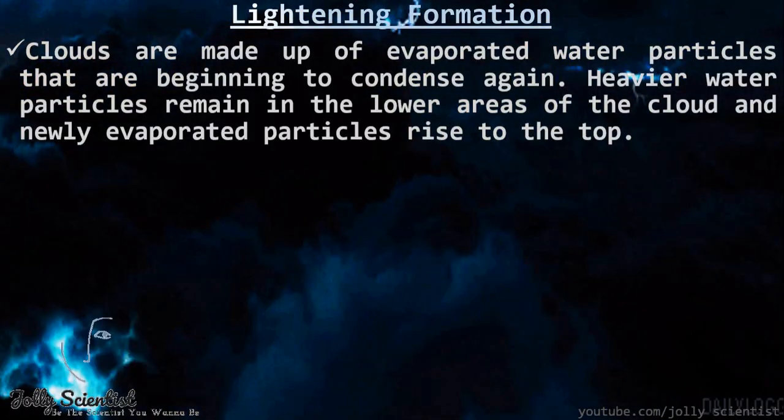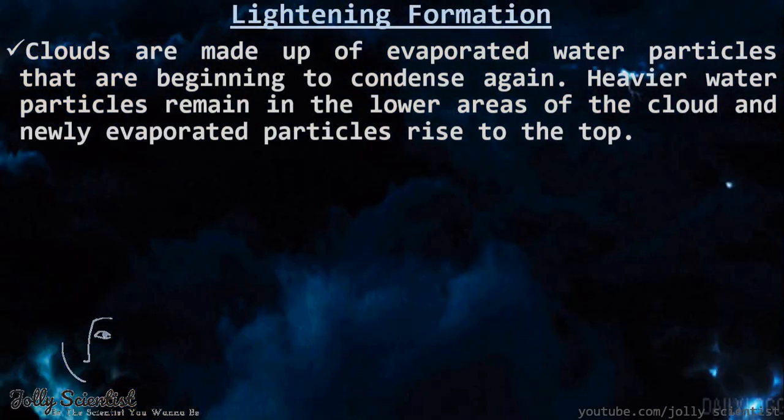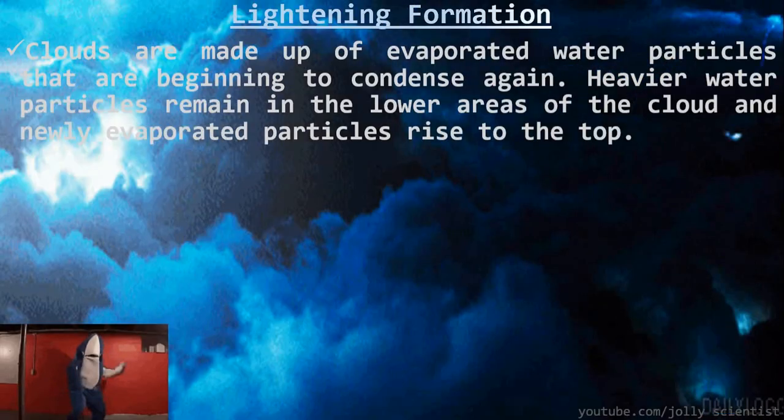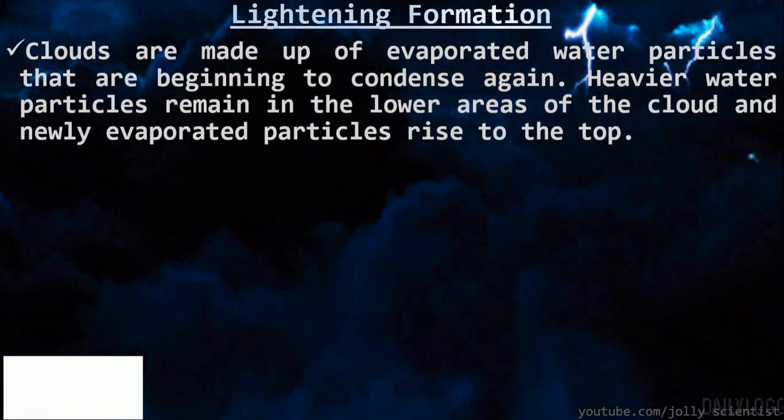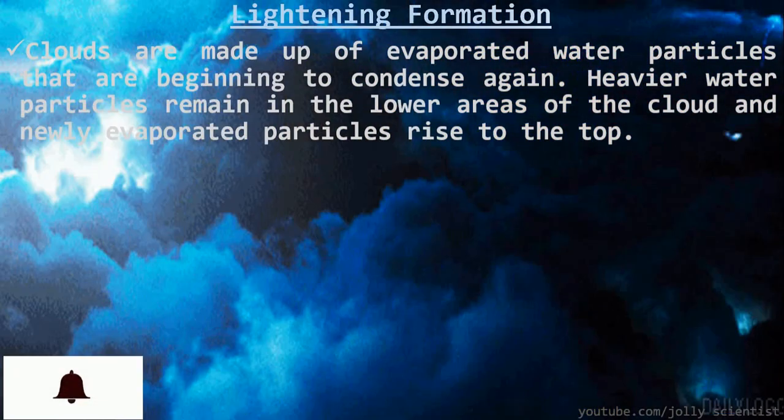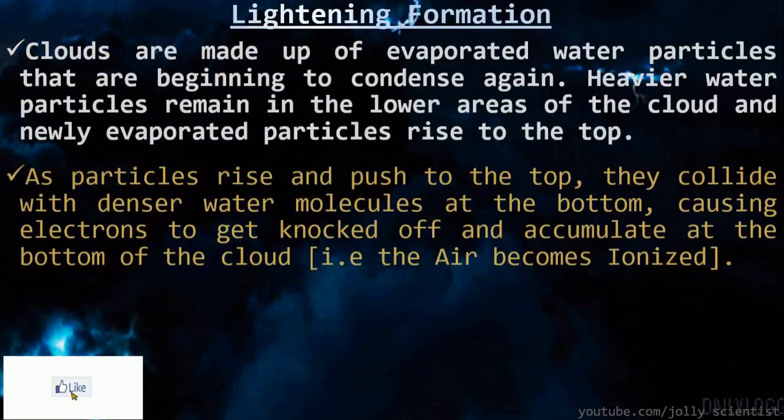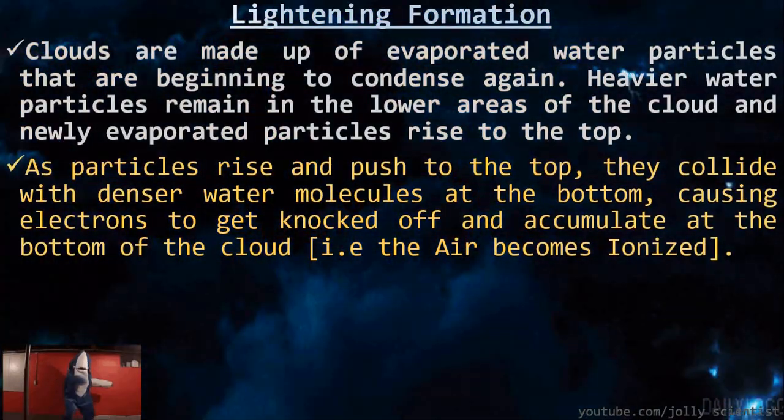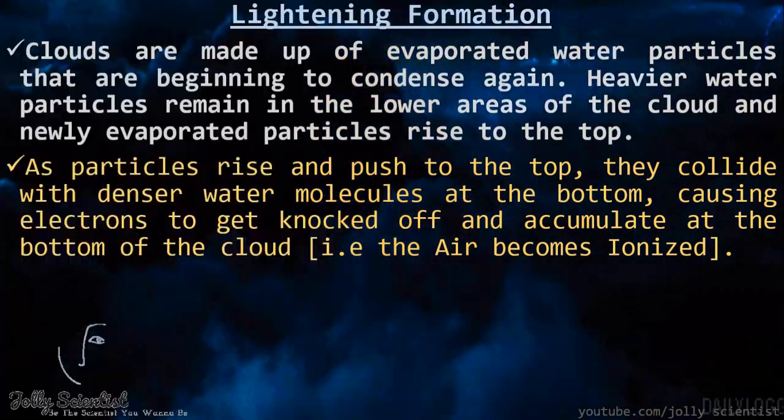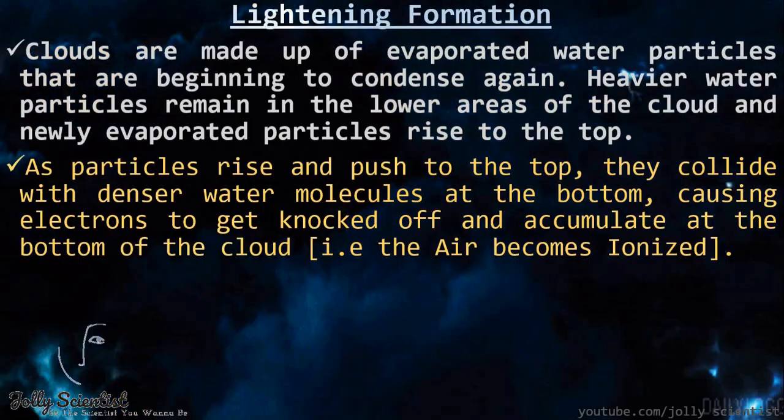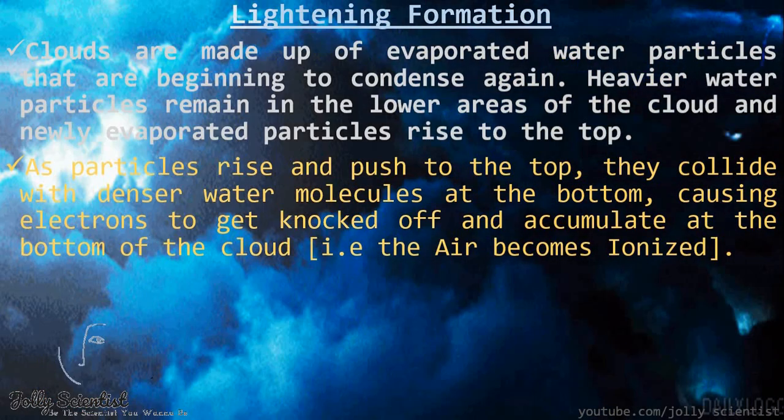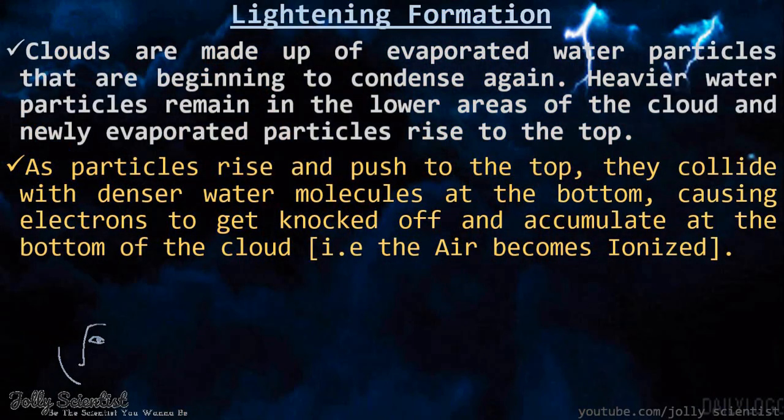Lightning formation. You see, clouds are made up of evaporated water particles that are beginning to condense again. Heavy water particles remain in the lower area of the cloud and newly evaporated particles rise to the top. As particles rise and push to the top, they collide with denser water molecules at the bottom, causing the electrons to get knocked off and are correlated at the bottom of the cloud. That is, the air becomes ionized.